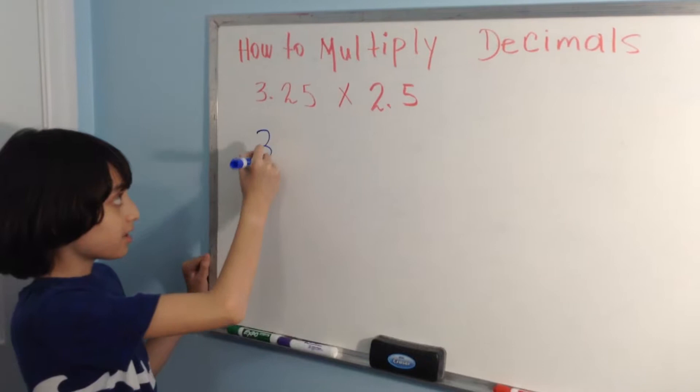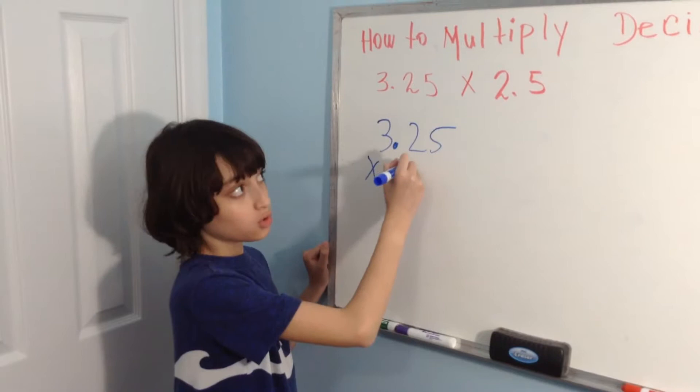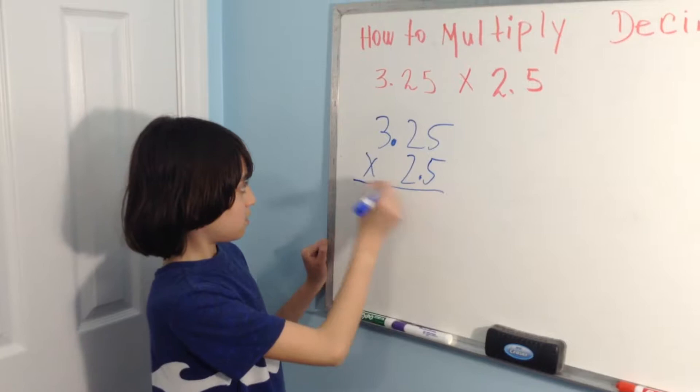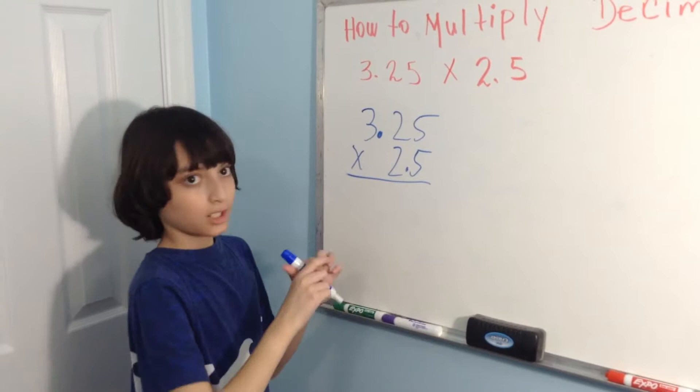3.25 times 2.5. Okay, ignore the decimals for now. You have to pretend that the decimals are not there.